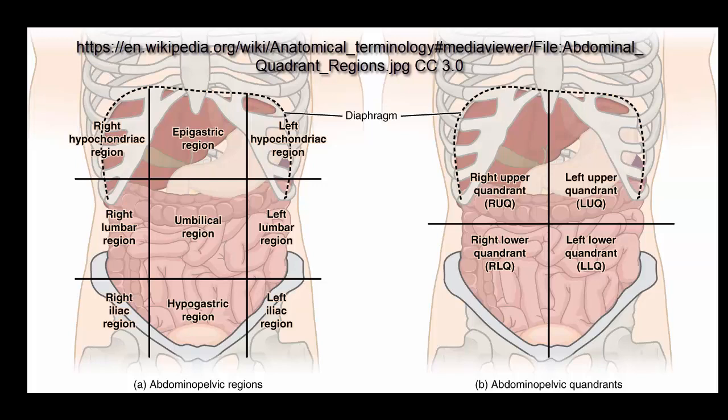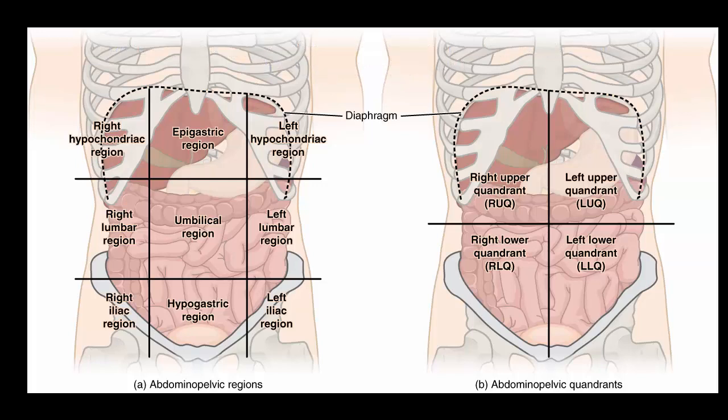The quadrants are labeled by location: the right upper, right lower, left upper, and left lower quadrants. The nine regions are smaller than the four quadrants and include the right hypochondriac, right lumbar, right iliac, epigastric, umbilical, hypogastric, left hypochondriac, left lumbar, and left iliac divisions. The perineum is frequently considered as the tenth division.